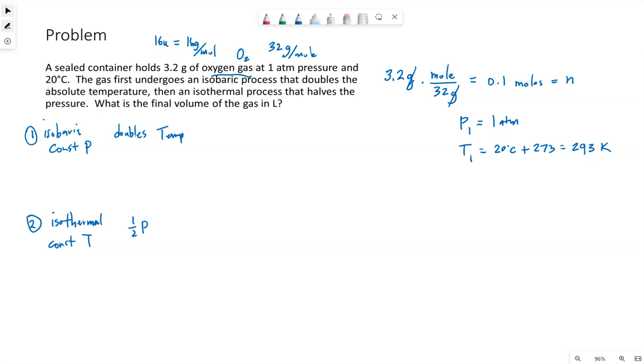All right. So isobaric, our first process. We have constant pressure. So the relationship that applies in constant pressure is that V1 over T1 has to equal V2 over T2. So if our temperature is doubling, that means T2 is 2 times T1. The T1 will cancel. V2 has to be 2 times V1. So we actually need to know what V1 is to know what V2 is.